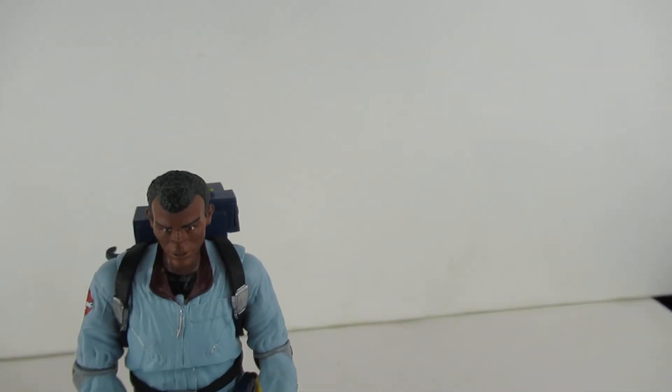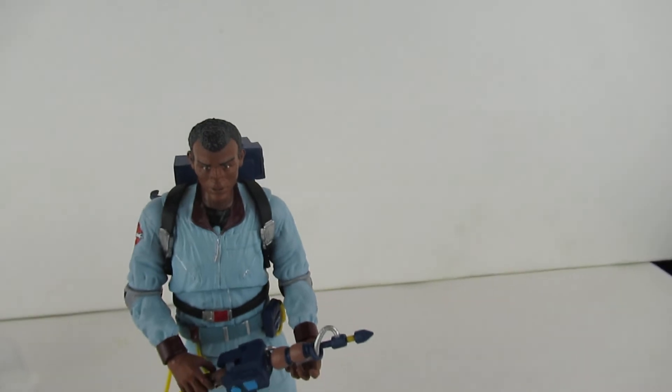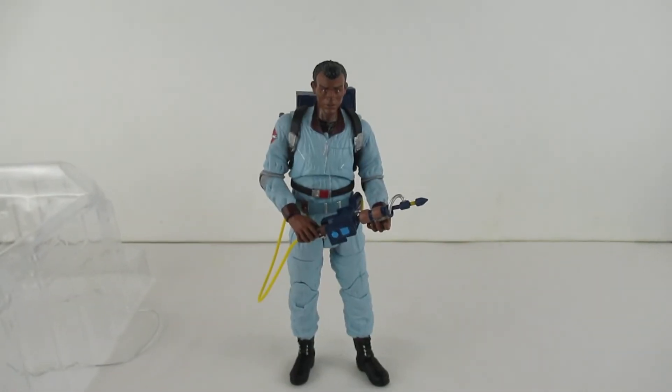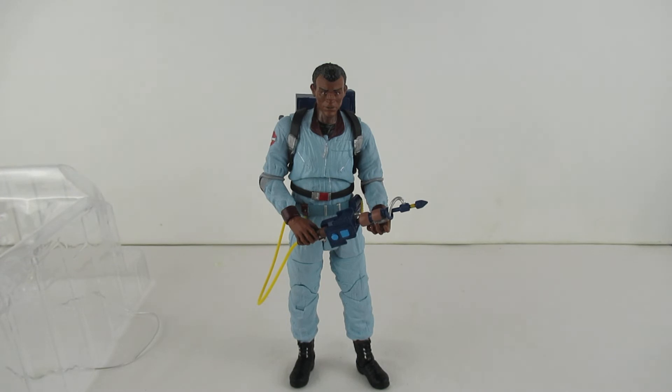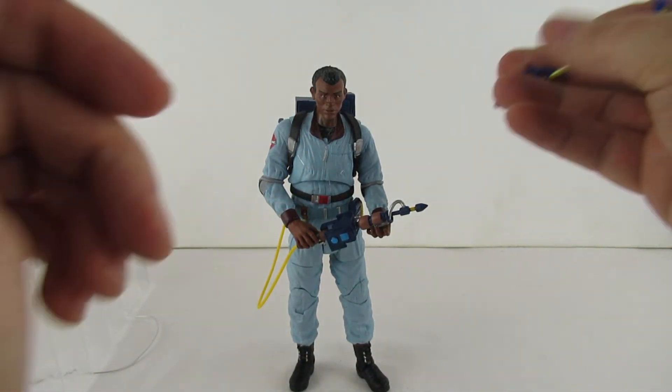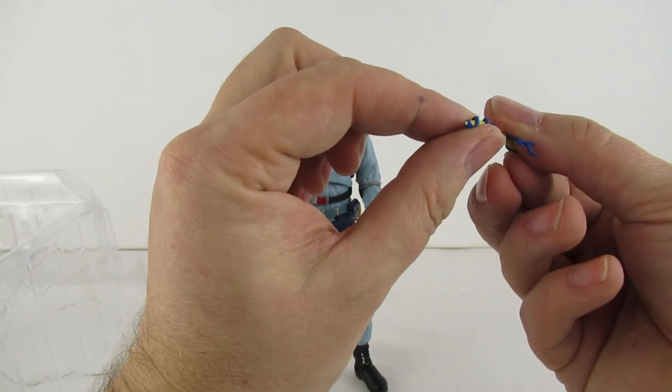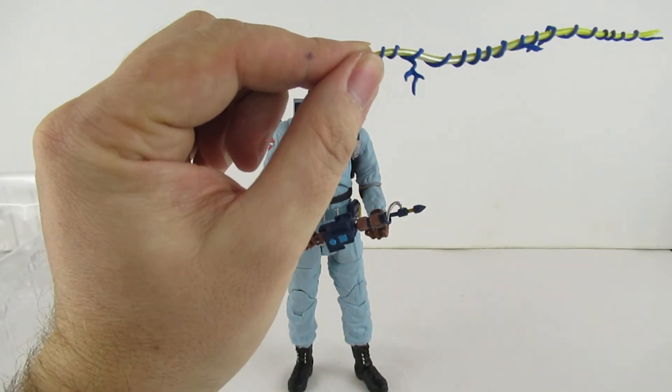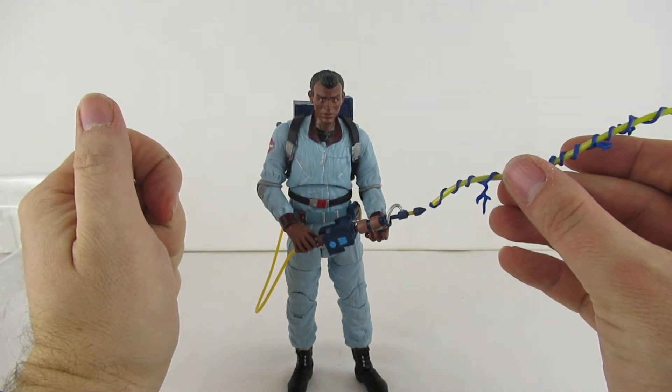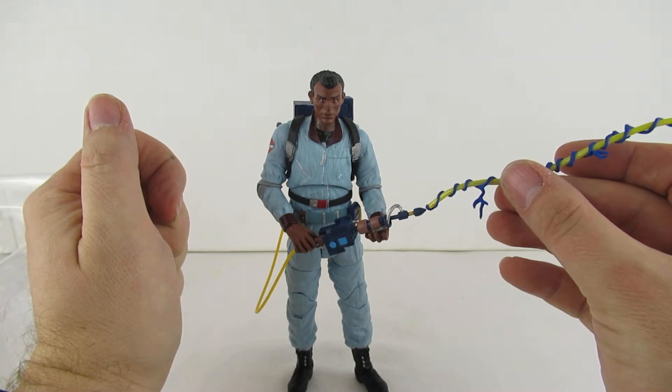I thought it actually had, hang on. I thought it had like some proton stream with it. Unless I've dropped it. Hang on a minute. Stop your grinning and drop your linen. We have proton stream. Which I don't know, were you supposed to connect it to the end of there? Because there isn't a peg on that. Is there anything in there? Nope. I haven't broken it off. So I guess all you do is go, ooh look at that. He's shooting his laser. He's shooting his proton. Because it ain't going to sit on there is it?